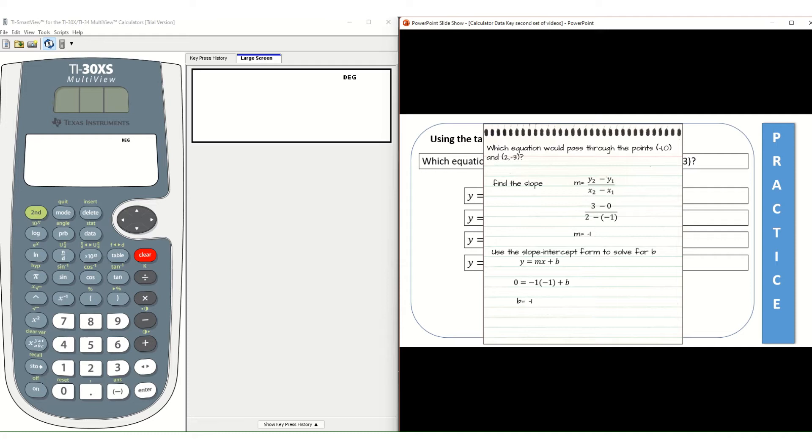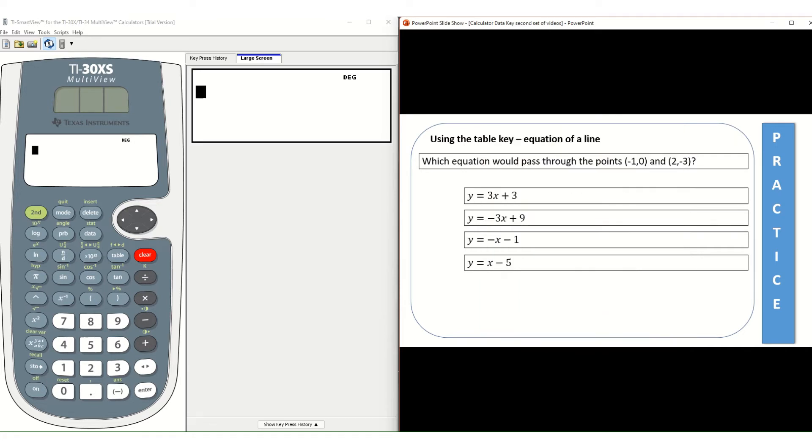As you can see from the screen I use the slope formula to figure out that the slope is negative 1 and the y-intercept B equals negative 1 as well. So most people when they figure out the slope and they look at their answer choices, they know that this is going to be the answer choice because the nice thing about multiple choice questions is that the answer is there for you. You just got to figure out which one of your choices is the answer choice.